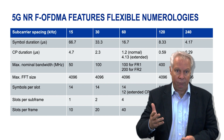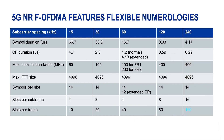For example, in higher frequencies — frequency range 2, FR2 — the 60, 120, and 240 kHz numerology subcarrier spacings would be allowed. In FR1, the lower frequencies, we can use 15, 30, and 60 kHz. So depending on the quality of service we want to offer, we can select the most suitable air interface mechanism.